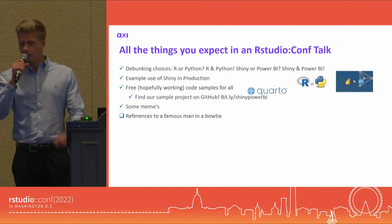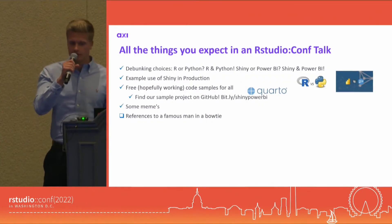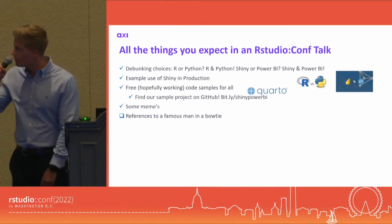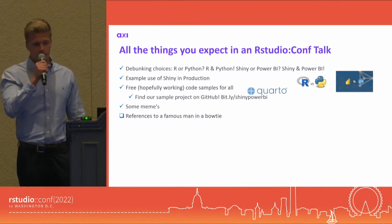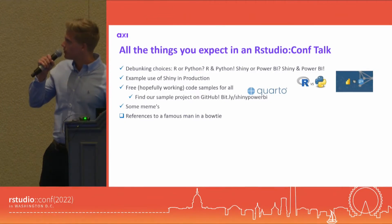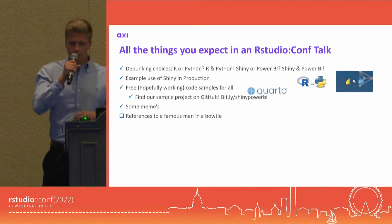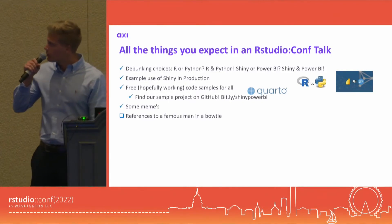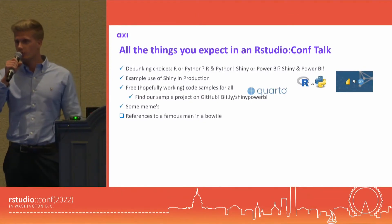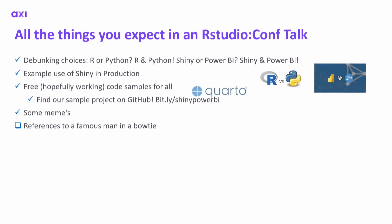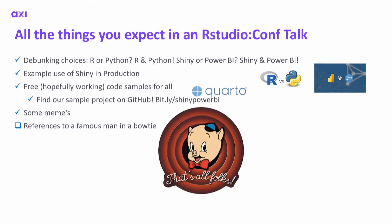At the start of the presentation we mentioned several goals — we covered debunking choices and examples of Shiny in production. You can find our code samples via the link on the slide, including step-by-step documents created with Quarto. We didn't cover the reference to the famous man in a bow tie — so without further ado, that's all folks!